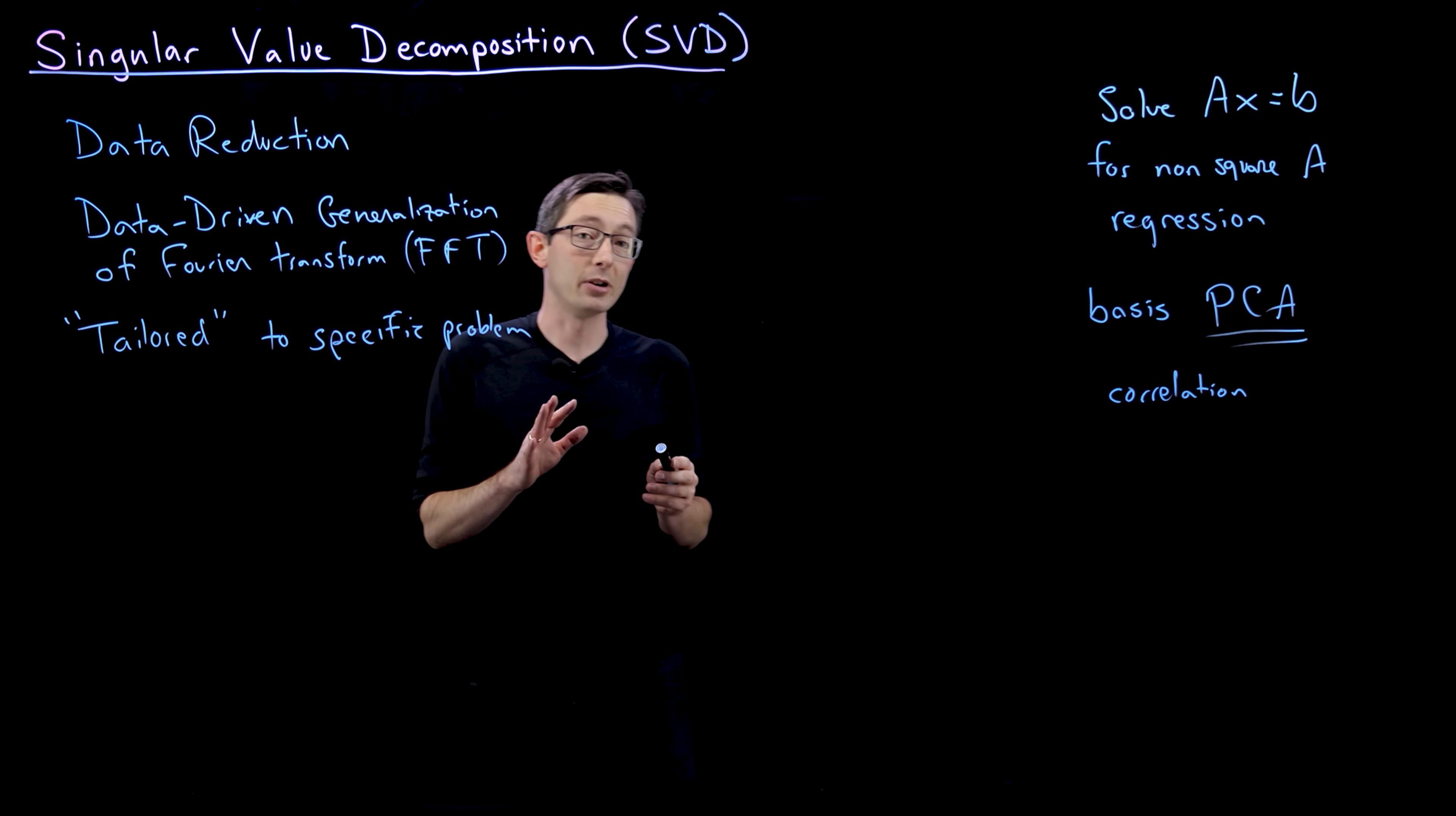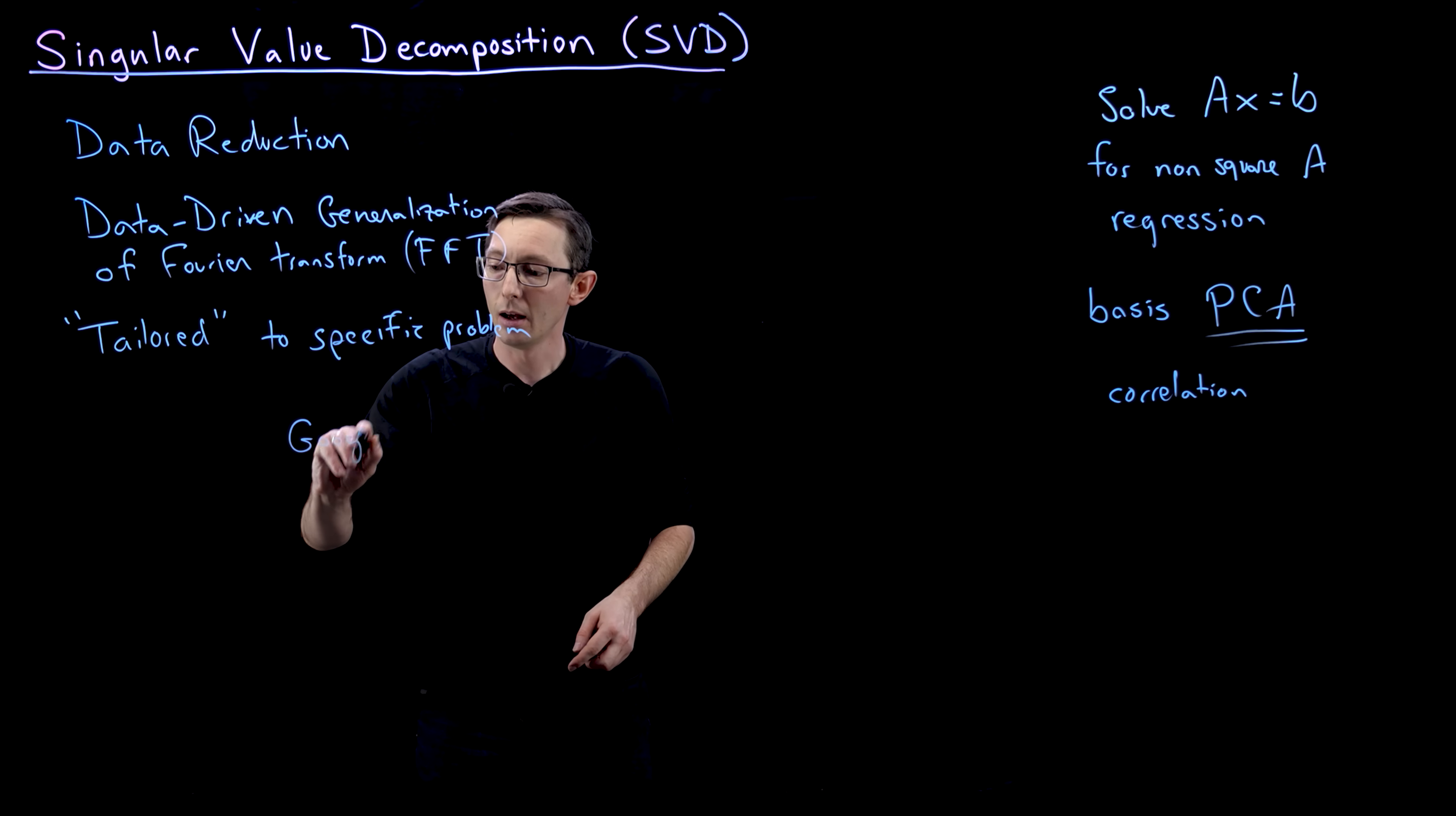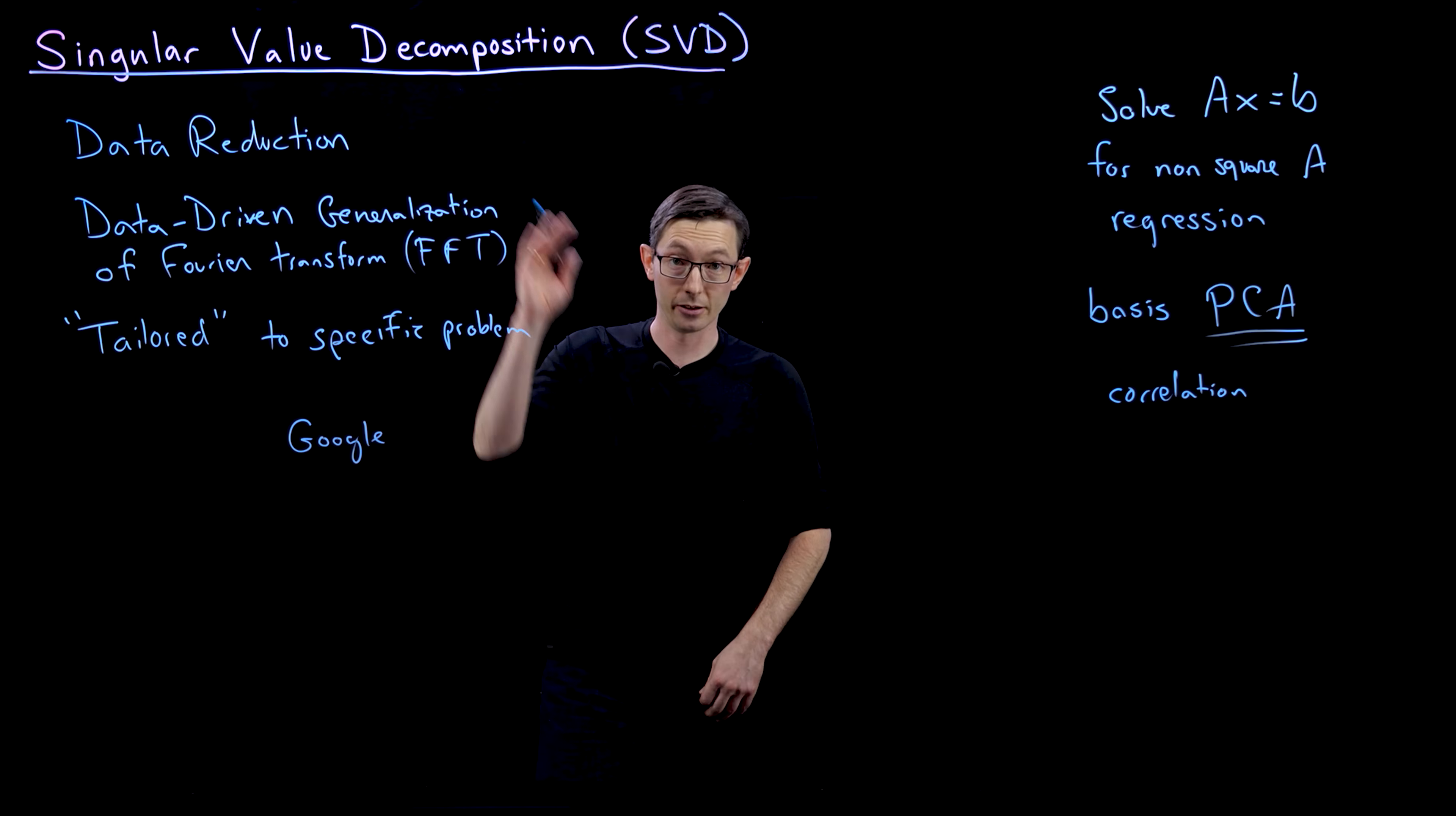It really is used everywhere. It's used in Facebook, Google, Microsoft. So for example, it's used in the Google page rank algorithm. So when you search something on Google and it presents the websites in an order, it's using an SVD for that, a singular value decomposition.